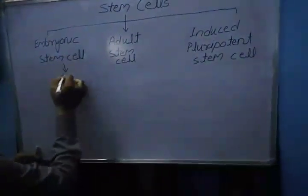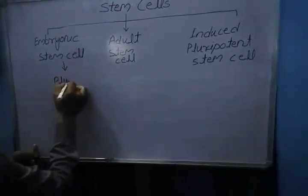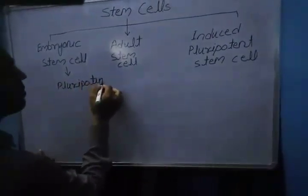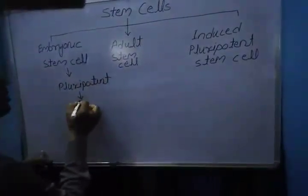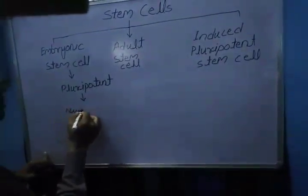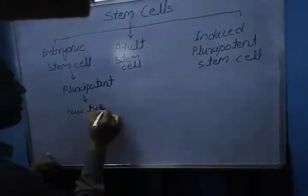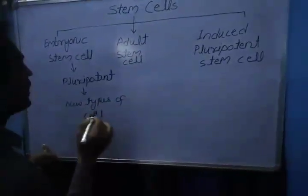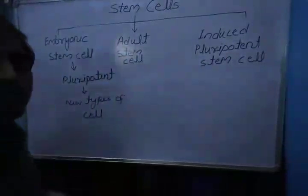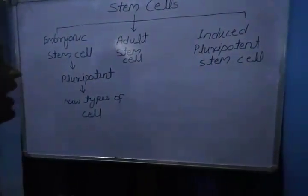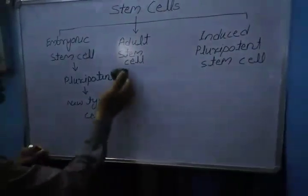It is pluripotent in nature. Pluripotent means it changes into new types of cells so that the embryo develops into a fetus and forms the body and forms the baby.